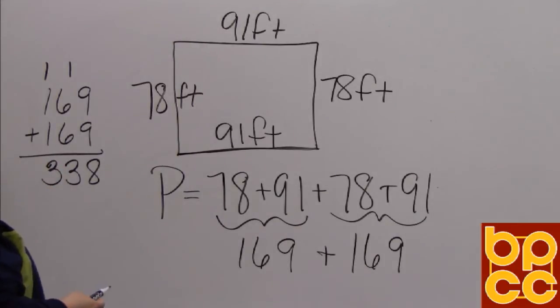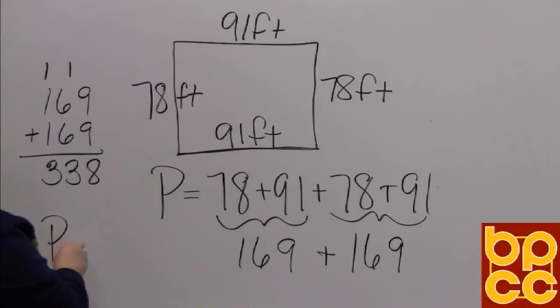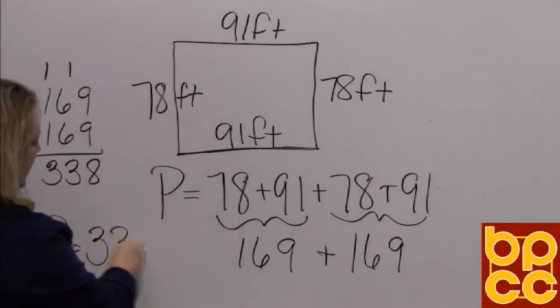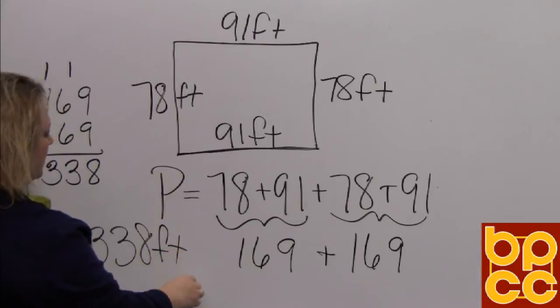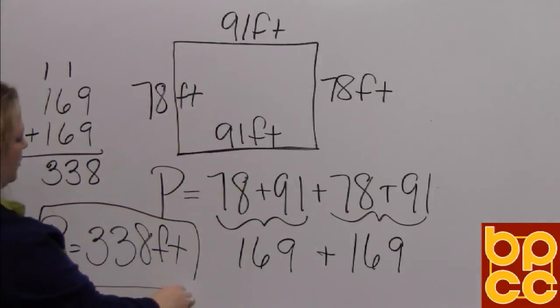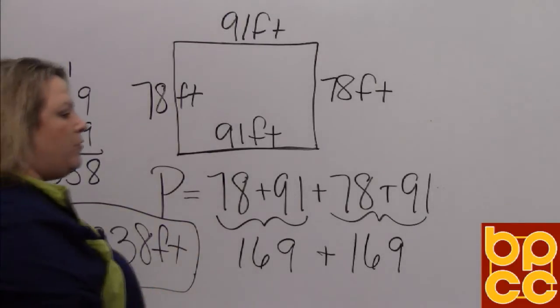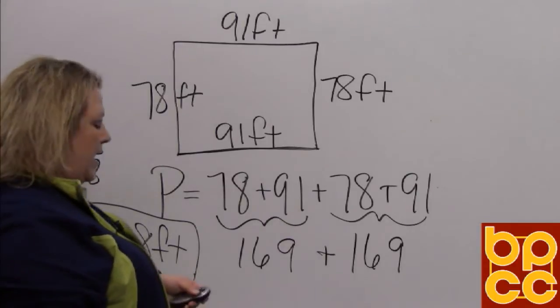So our final perimeter would be 338. And this is measured in feet, so you would always want to label your measurements. So the perimeter would be 338 feet.